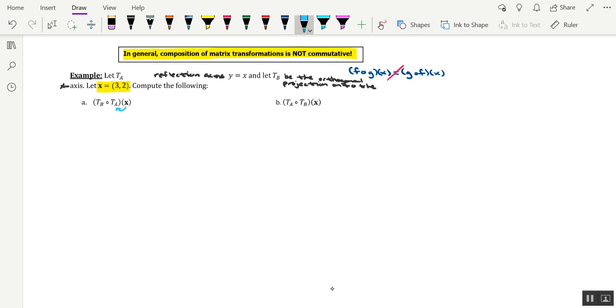Alternatively, you could write this as capital T sub b of capital T sub a of x. And ultimately, it boils down to this multiplication, the standard matrix for t sub b times the standard matrix for t sub a times the vector x.